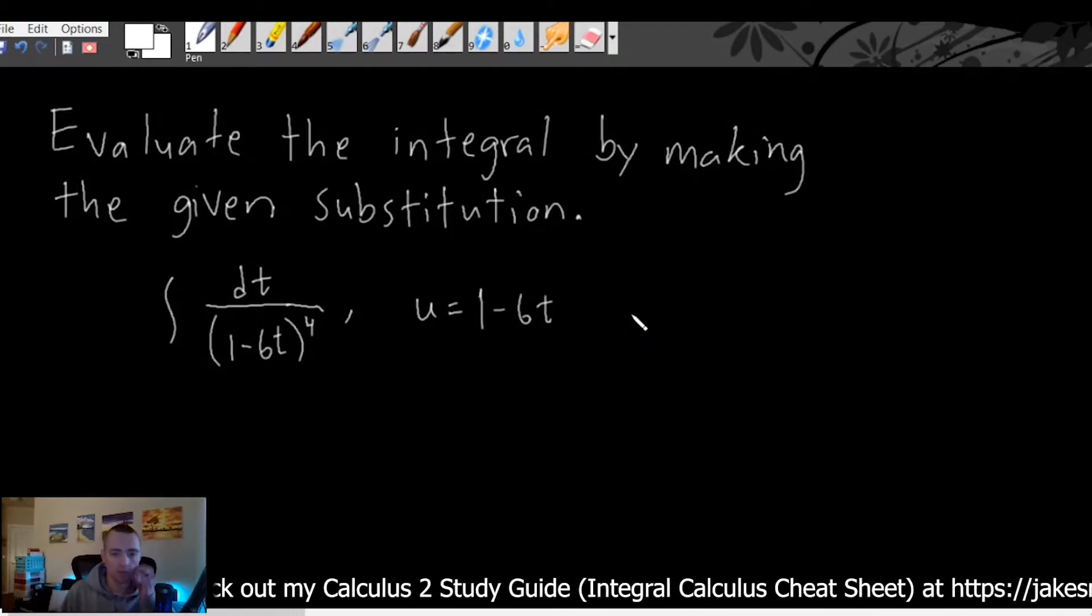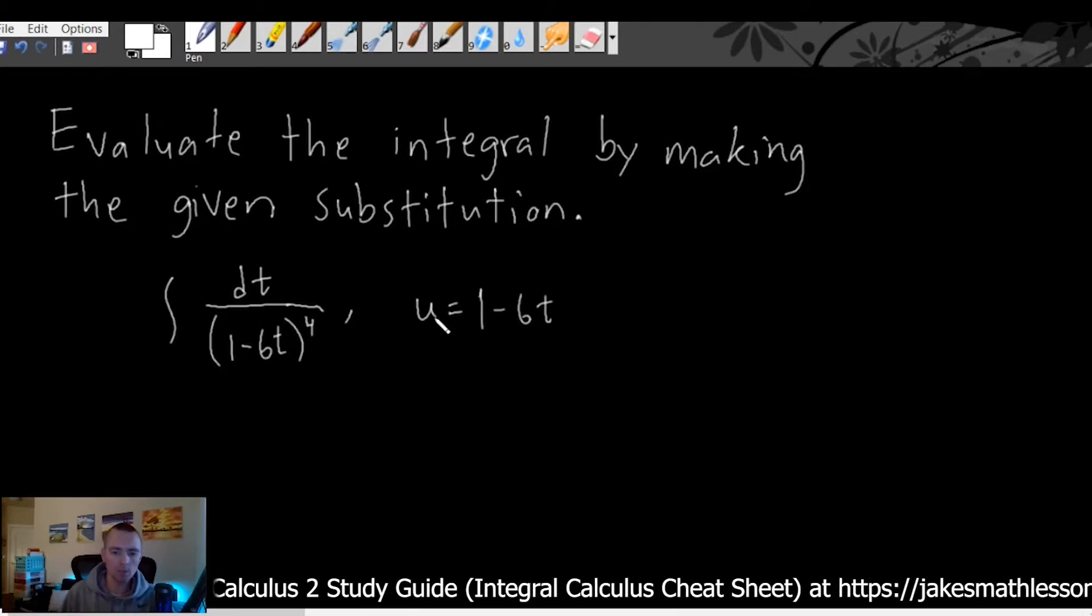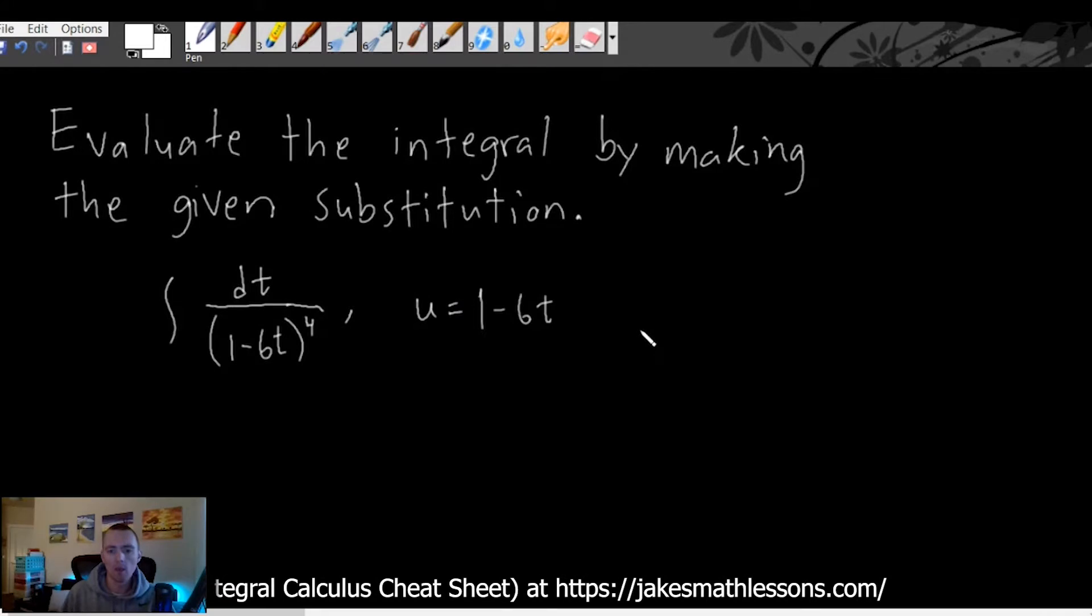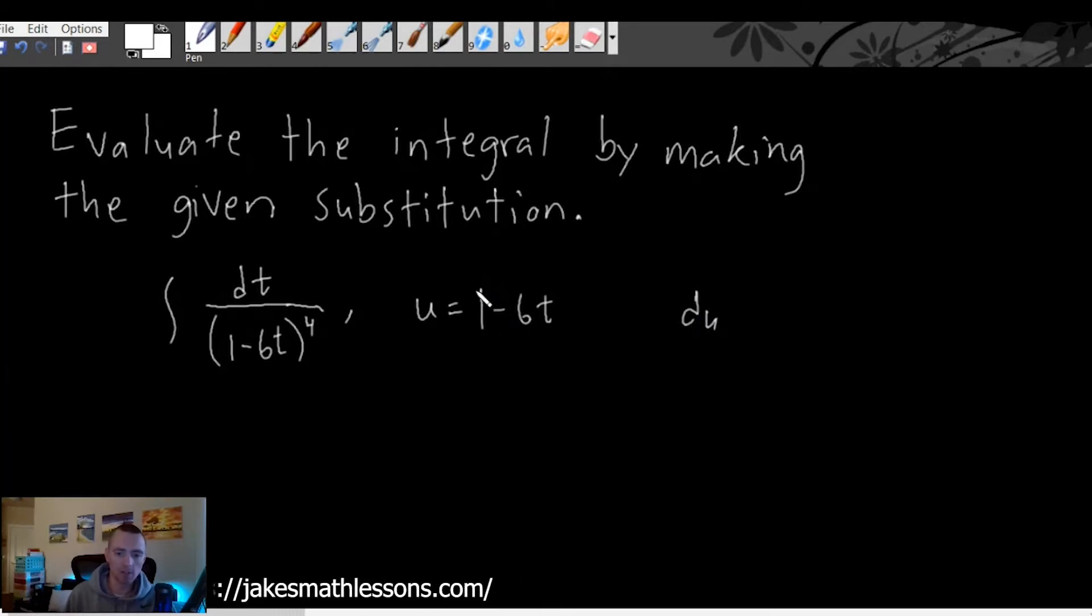When we're doing these U substitution problems once we've figured out what we want to make our U, or the thing that we're going to substitute out, the next step is to basically figure out what du is. So du you're going to figure out by just taking the derivative of whatever u is.